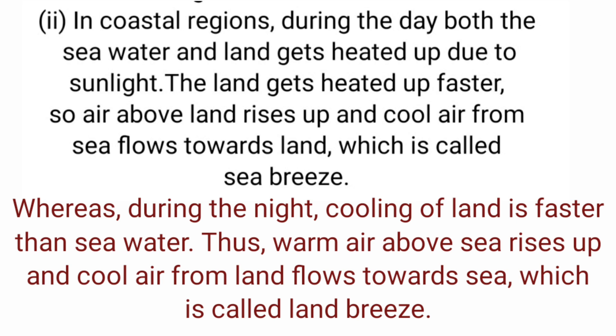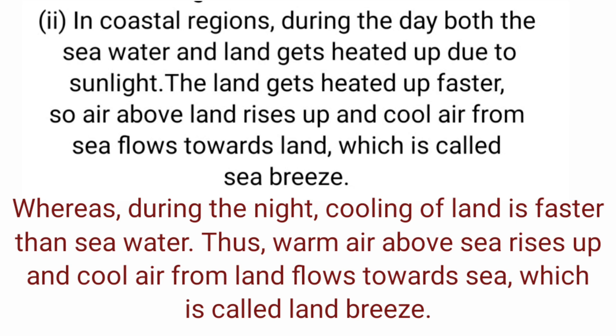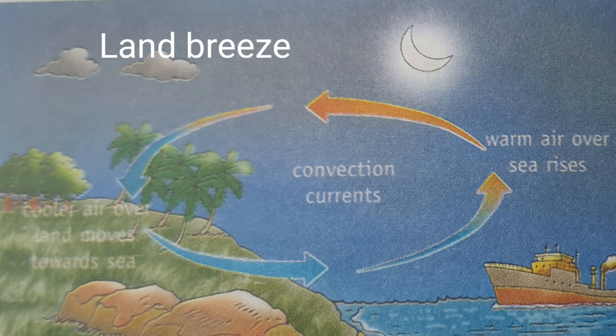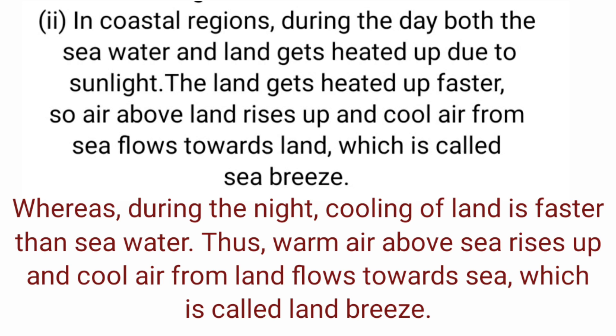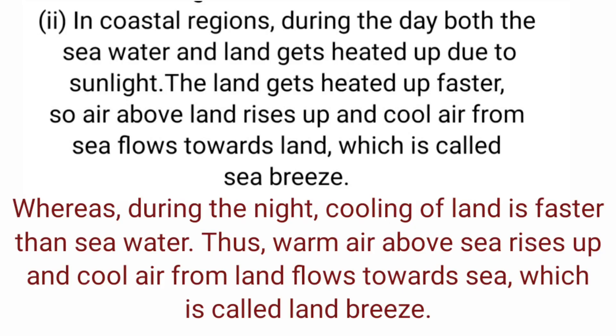At night, both land and sea start getting cold. Since water cools down more slowly than land, the air above the water is warmer than the air above the land. The air above the sea starts rising, and the land air moves to the low pressure area. So the direction of wind is from land to sea during the night — this is called land breeze.